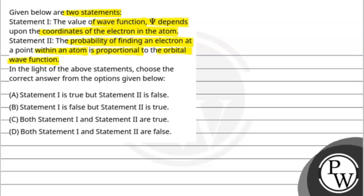The options are: Statement 1 is true but 2 is false; Statement 1 is false but 2 is true; both statements 1 and 2 are true; and both statements 1 and 2 are false.